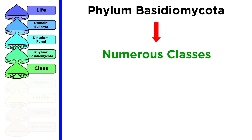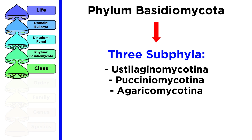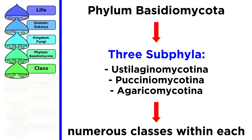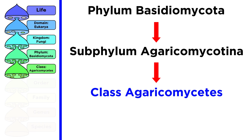The taxon below a phylum is known as a class. Any class within the kingdom of fungi has the ending mycete. There are three subphyla within the phylum basidiomycota, and within each of these there are numerous classes. As we go down each taxon, the amount of specificity to classify needs to increase, which leads to innumerable divisions. We do not have time to cover each of these divisions in this tutorial, though many of them will be discussed as we move through the series. Regardless, we need to finish classifying our fly agaric, Amanita muscaria.